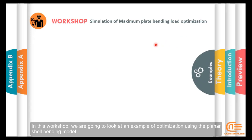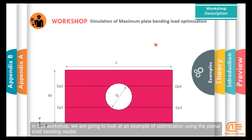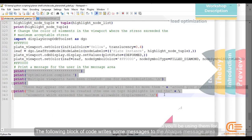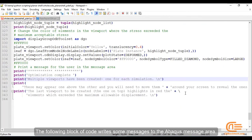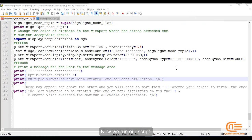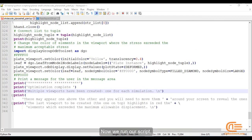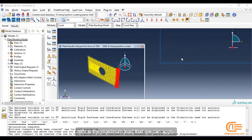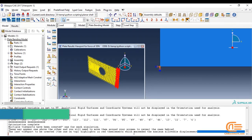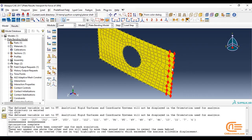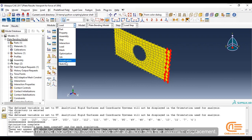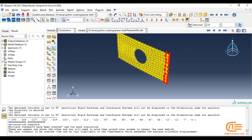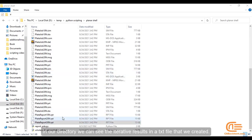In this workshop, we are going to look at an example of optimization using the planar shell bending model. The following block of code writes some messages to the Abaqus message area. Now we run our script. 30 Newtons is the maximum load that we can apply. The messages are visible here. The red nodes have deformations that are more than the maximum displacement. In our directory, we can see the iterative results in a .txt file that we created.